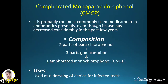CMCP (camphorated monochlorophenol) is probably the most commonly used medicament in endodontics, though its use has decreased considerably in recent years. Its composition is two parts parachlorophenol and three parts gum camphor. It is used as a dressing of choice for infected teeth.